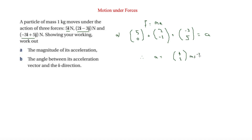We haven't finished though, as it asks for the magnitude. The magnitude of A is the square root of 4 squared plus 2 squared using Pythagoras, which is equal to 2 root 5 metres per second squared.